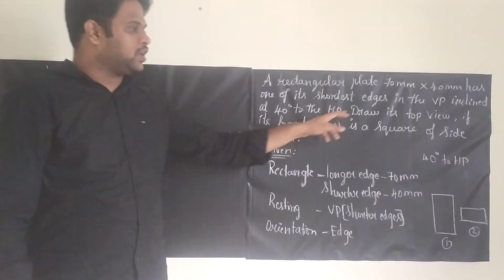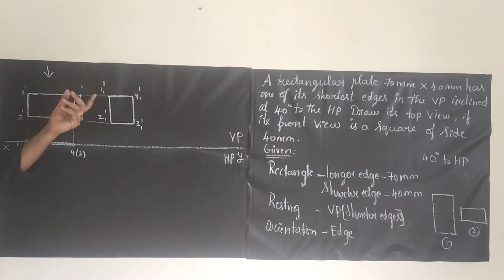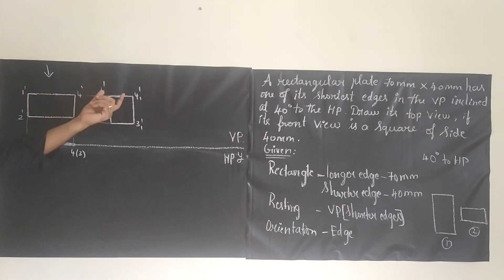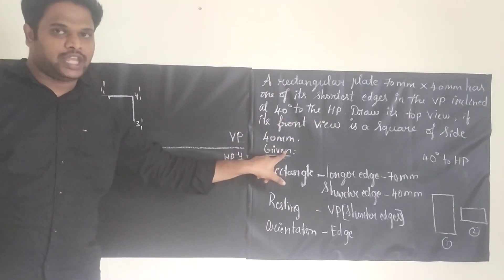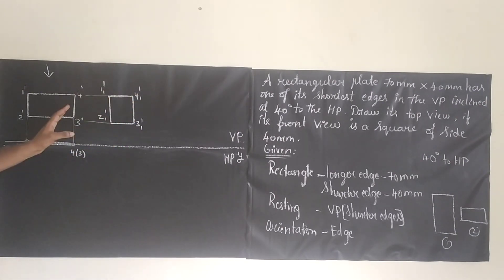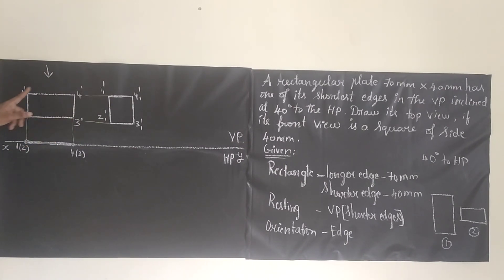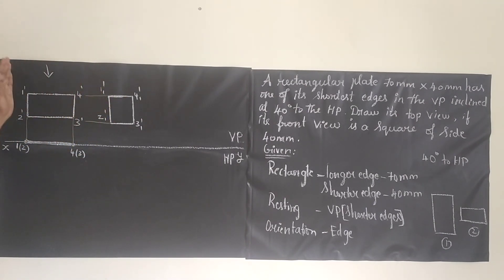They have given that the front view is seen as a square. So what we are going to do — take your scale and draw a line of 40mm, because the square side is 40mm. All four sides will be equal — 40, 40, 40, 40. We can write the corners as 1 and 1-dash, 2 and 1-dash, etc. So we have got this square. With reference to the previous diagram, we are now going to extend these lines to some extent.